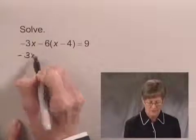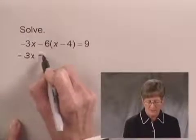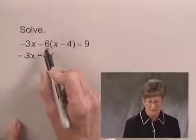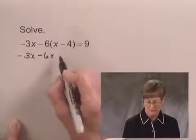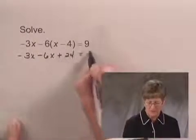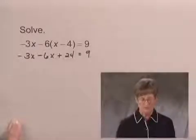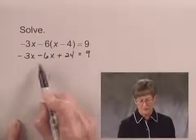We'll have negative 3x minus 6 times x, which is minus 6x, minus 6 times negative 4, which gives us plus 24, and that's equal to 9. Now I have two x terms on the left-hand side,